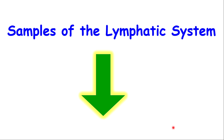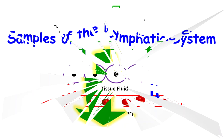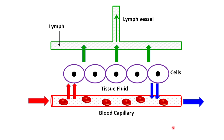Next we'll look at some examples of the lymphatic system. Be aware that the lymphatic system can be drawn in many different ways, so I have three samples to show you. No matter how the system looks, they are all doing the same thing. Here is the simplest version — the three things you're looking at are the lymph vessel, the capillary, and the blood and cells of the body.